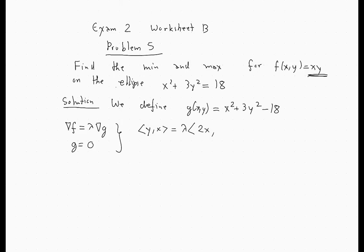And of course, we should also have that x² + 3y² = 18. So that would give us y = 2λx and x = 6λy and x² + 3y² = 18.